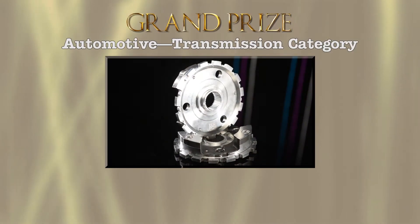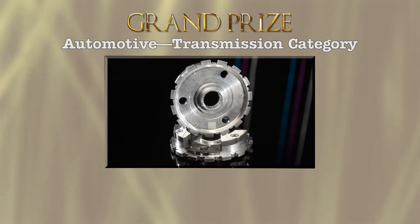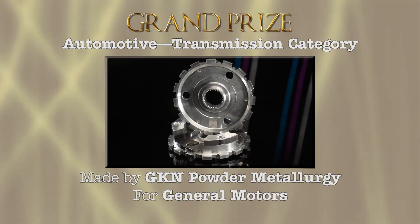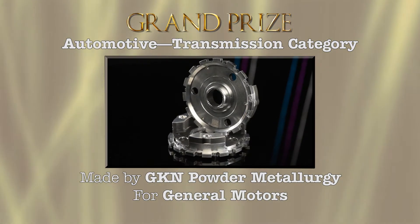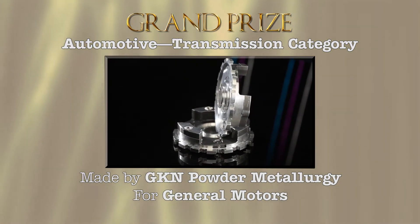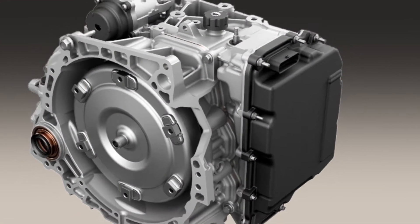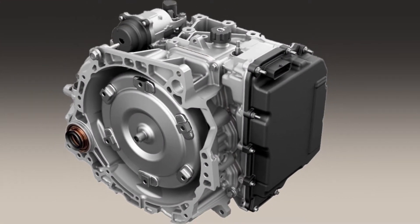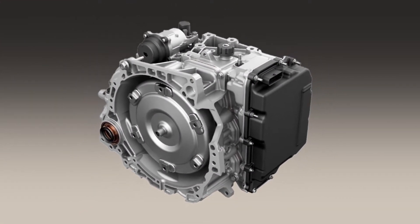The grand prize in the automotive transmission category has been awarded to GKN Powder Metallurgy for an aluminum PM planetary reaction carrier made for General Motors. The carrier goes into the all-new GM 9T59 speed transmission offered in such vehicles as the Chevrolet Malibu and the Equinox crossover.